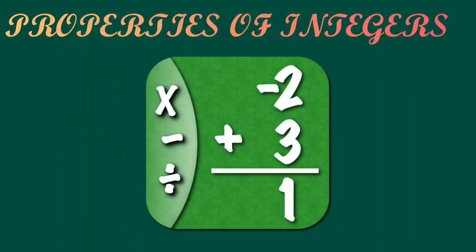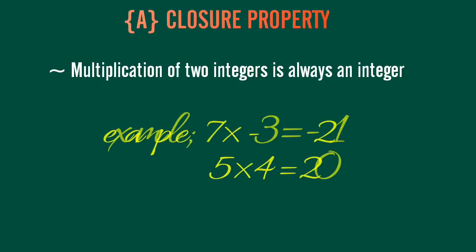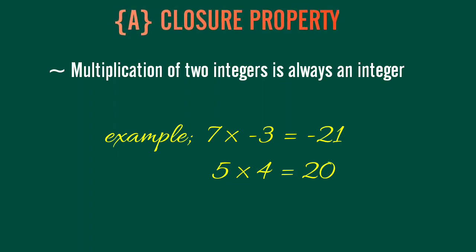Our next topic is properties of integers. Closure property: multiplication of two integers is always an integer.